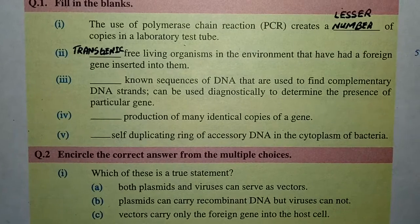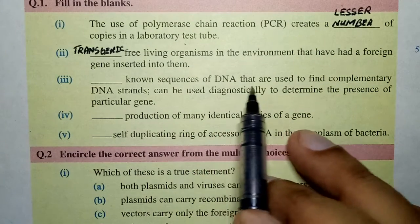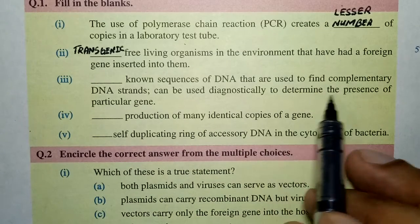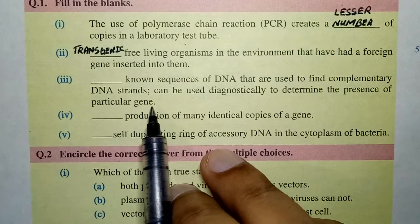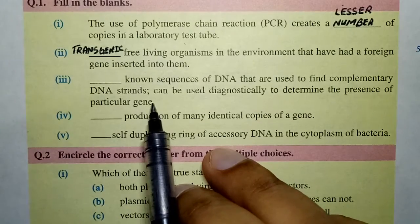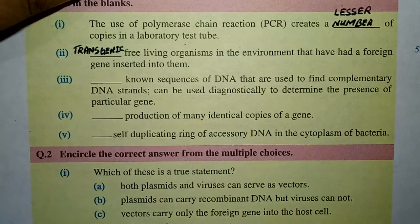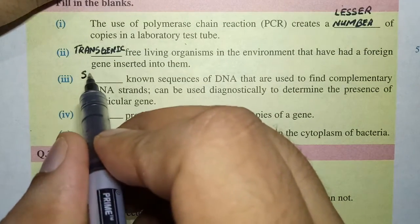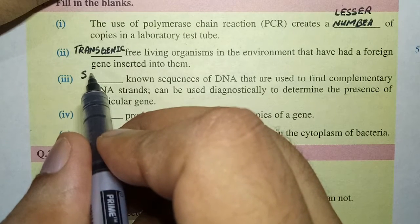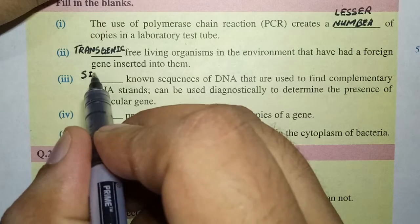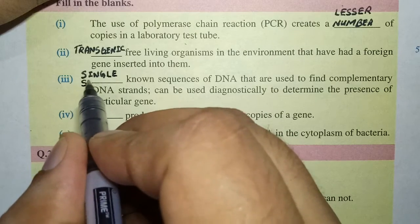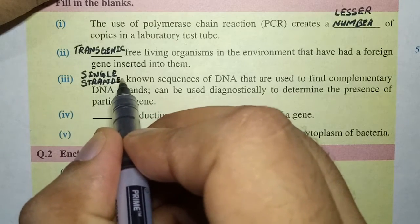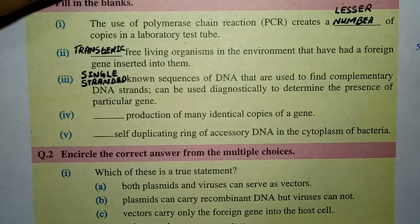The next blank: 'Dash known sequence of DNA that are used to find complementary DNA, and can be used diagnostically to determine the presence of a particular gene.' The answer here is single-stranded known sequence of DNA — so single-stranded.